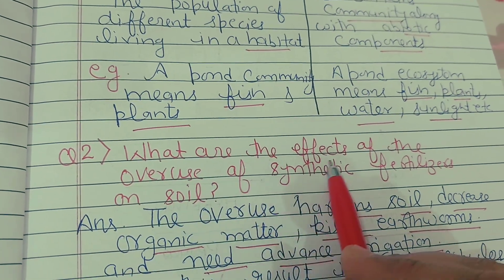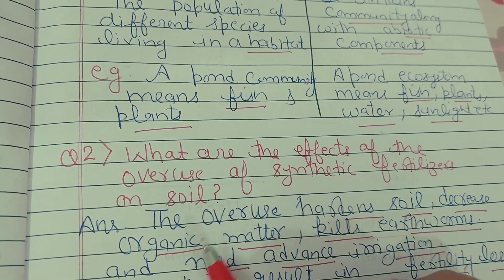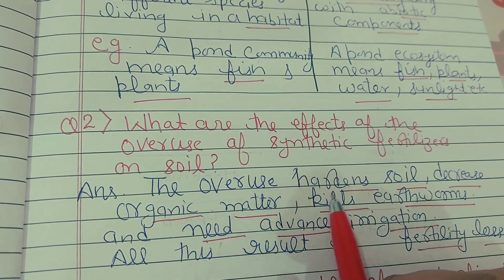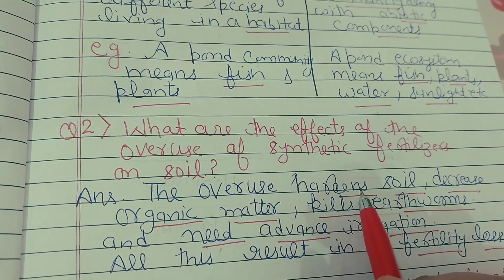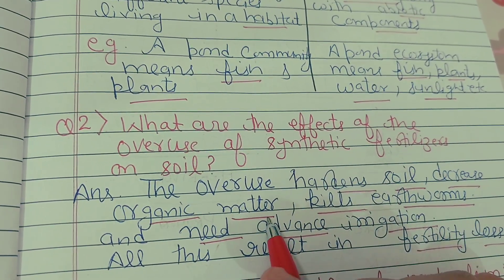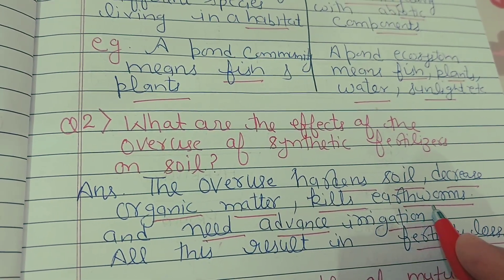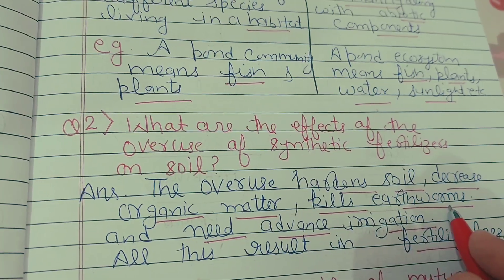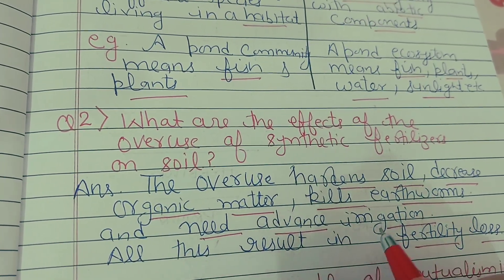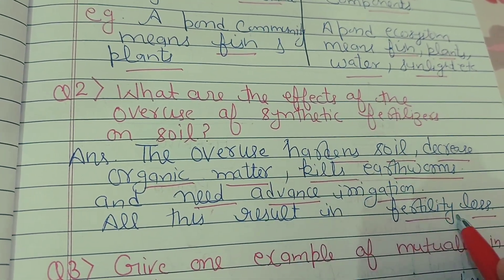Question number two: what are the effects of the overuse of synthetic fertilizers on soil? The overuse of synthetic fertilizers hardens the soil, decreases organic matter, kills earthworms — which are the farmer's friend — and increases the need for irrigation. All of this finally results in fertility loss.